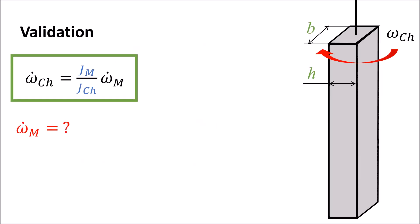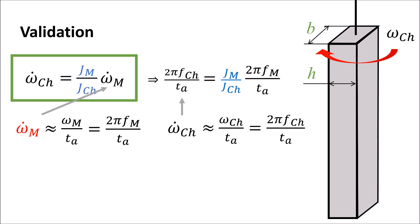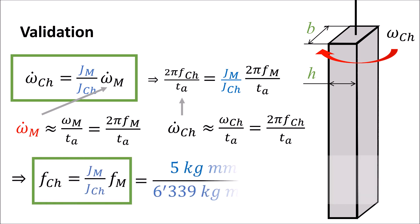Now we can insert the missing variable into the equation and derive the frequency of the hanging chassis. By the way, frequency means the same as the value of revolutions per time.